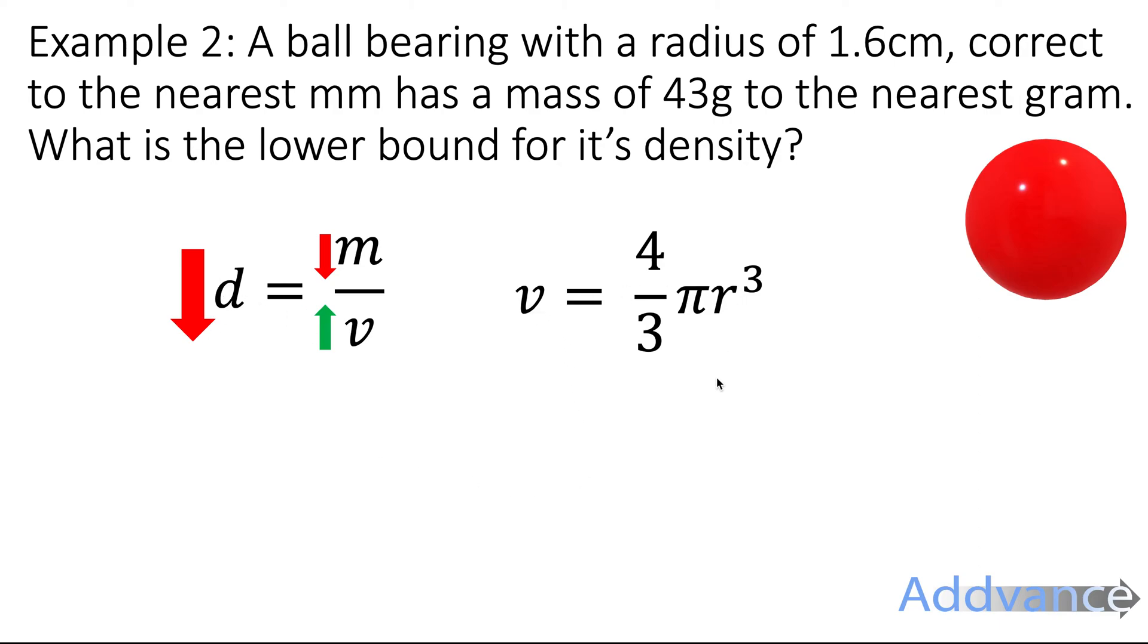Now for volume: to get a big volume, because we want a big volume for a small density, we want the radius to be big. The radius of the ball is 1.6 centimetres. The accuracy is 1 millimetre, which is 0.1 centimetres. Let's start by halving 0.1 centimetres to get 0.05 centimetres, and we're going to add or subtract that from the radius. Which gives us 1.55 cm ≤ r < 1.65 cm. But we said we wanted the big radius to get a big volume, so we're going to take 1.65 to work out the volume.